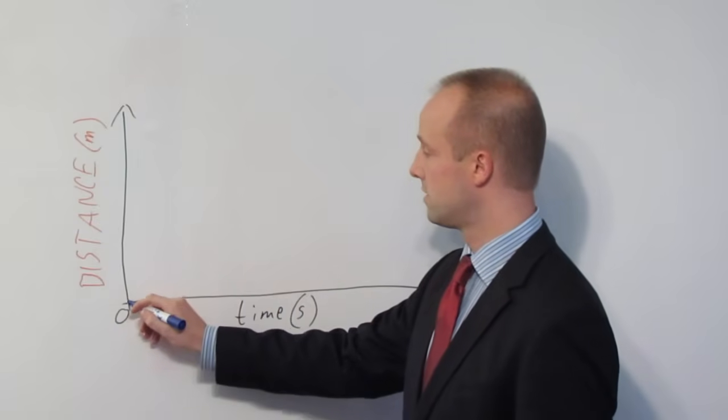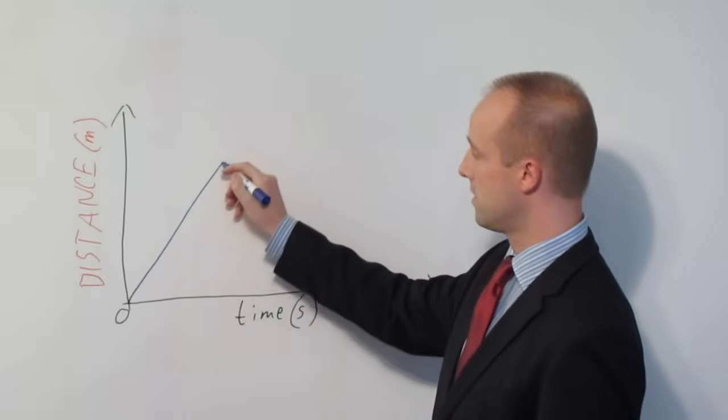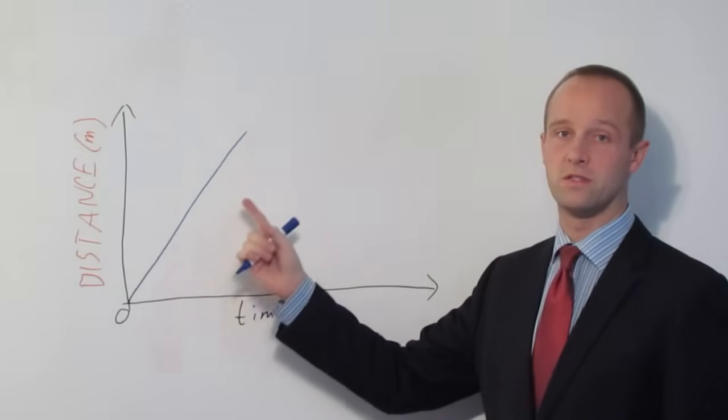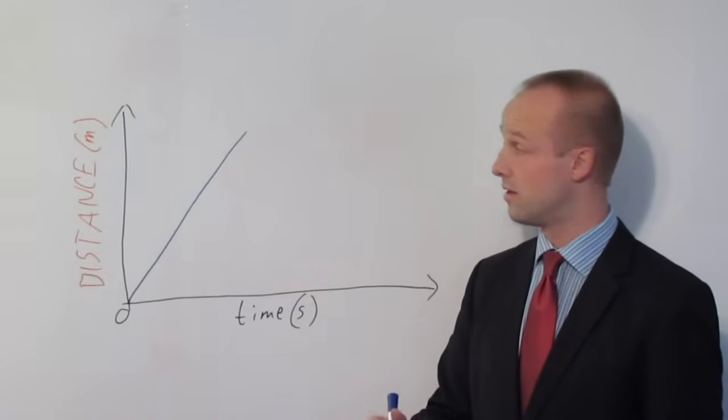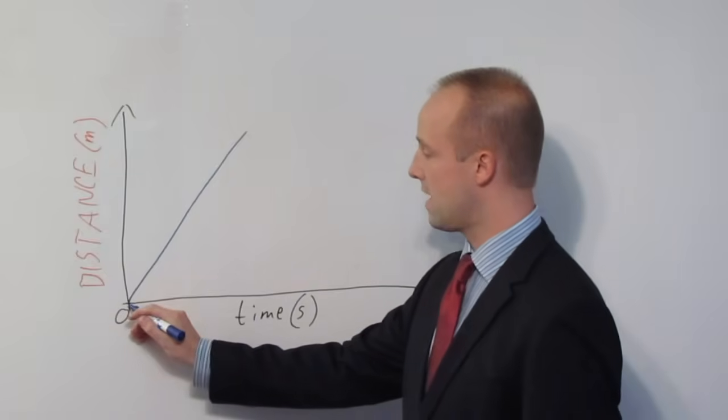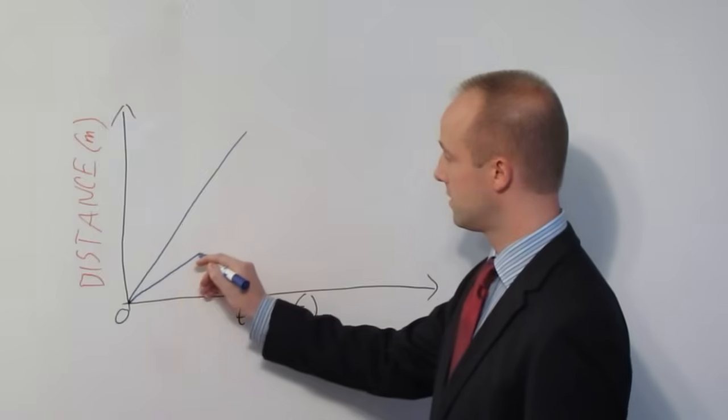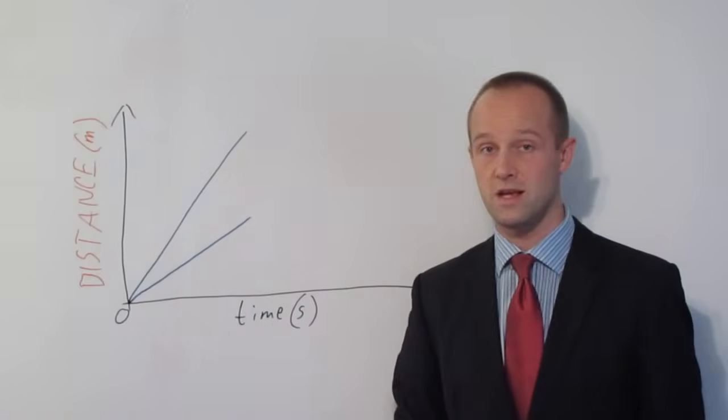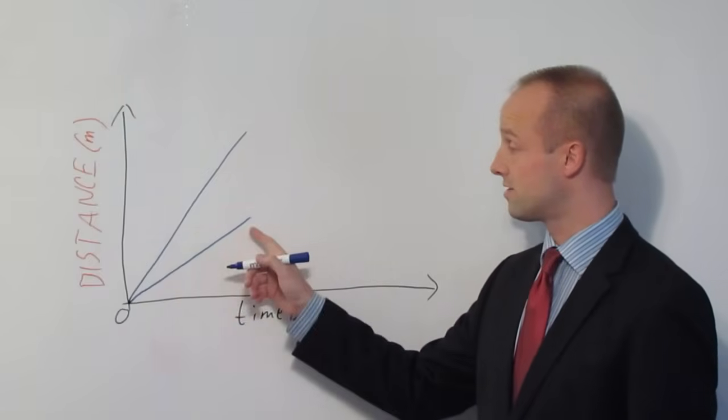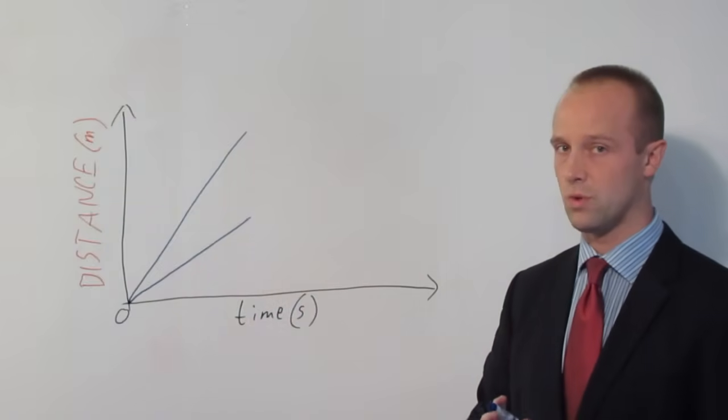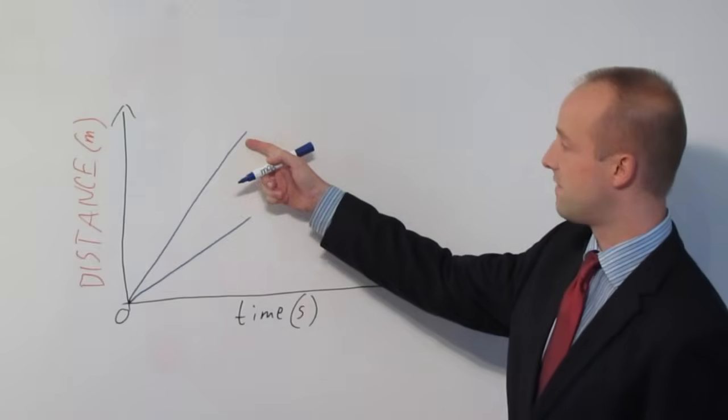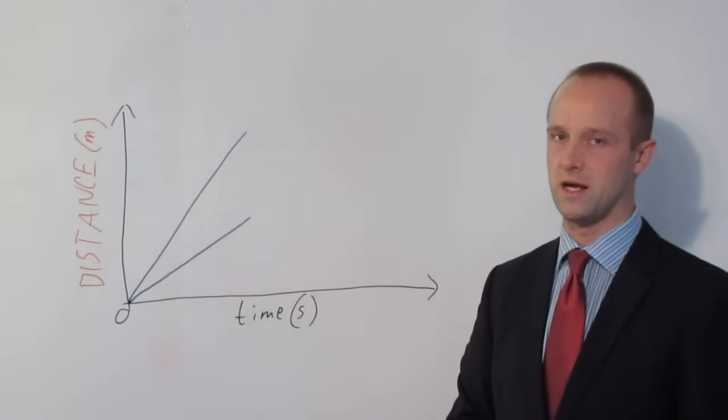So here's an object steadily getting further away. We can say it's got constant velocity or constant speed because it's a straight line, a constant slope. If we had a slope that wasn't as steep, that would also be a constant velocity, but because it's not as steep, it's a lower velocity, a lower speed. So it's not moving as quickly. This is a fast object. This is a slow object.